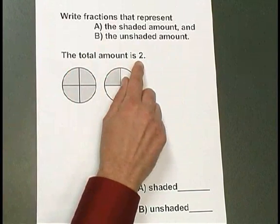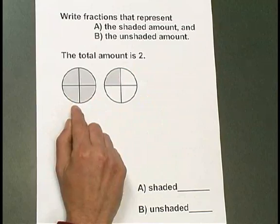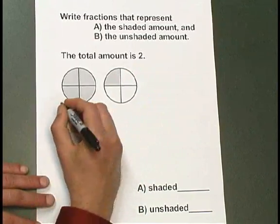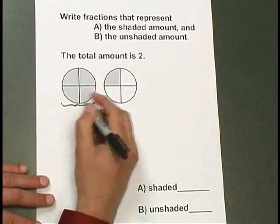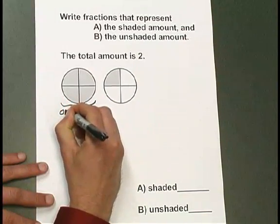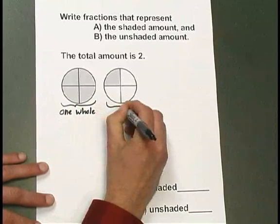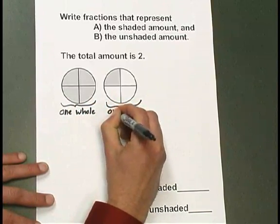Since the total amount is 2, each one of these two circles represents one whole. This circle is one whole, and the second circle is also one whole.